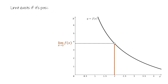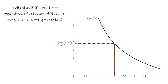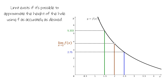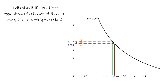This limit exists if it's possible to approximate the height of the hole using f as accurately as desired. To find the value of this limit, we first found an overestimate of its value, and then we found an underestimate of its value. The amount of error for the underestimate — that is, the difference between the underestimate and the value of the limit — was shown by the length of this red line, and the amount of error for the overestimate was shown by the length of this line. Both of these errors are less than the distance between the overestimate and the underestimate, so by moving the over and underestimate closer to each other, we could make our error as small as we desired.